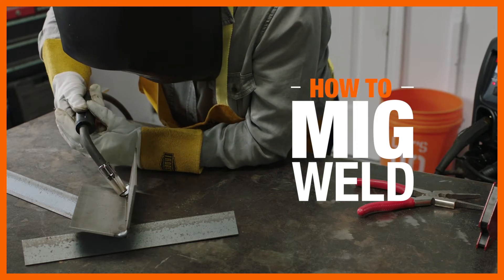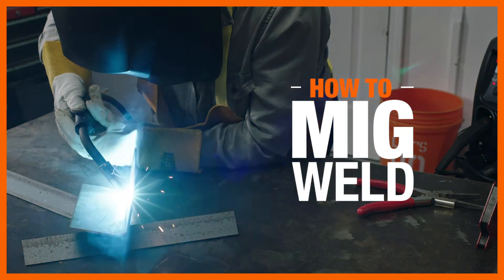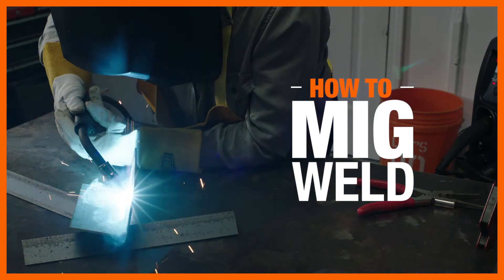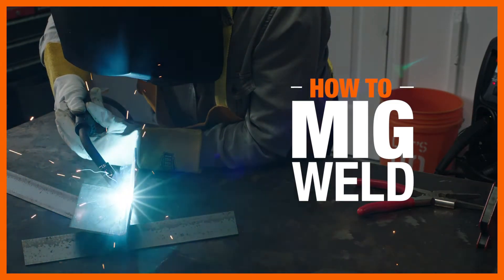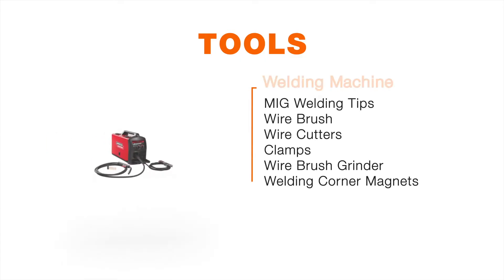MIG, or Metal Inert Gas Welding, takes welding to the next level, giving you a clean, secure bond when making repairs to a wide variety of alloy metals. Here's what you'll need to get started.